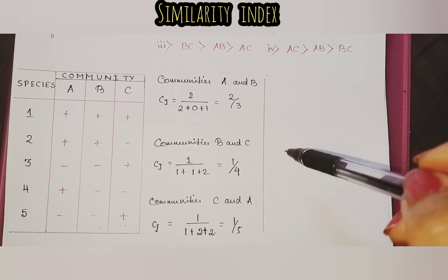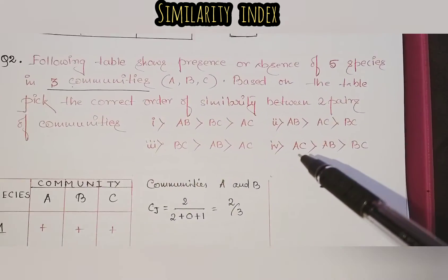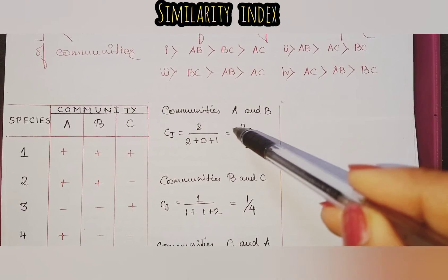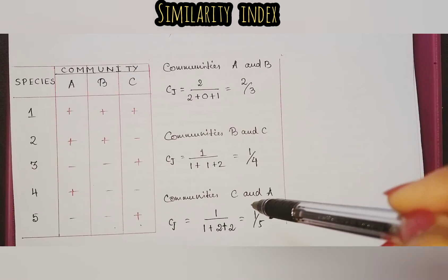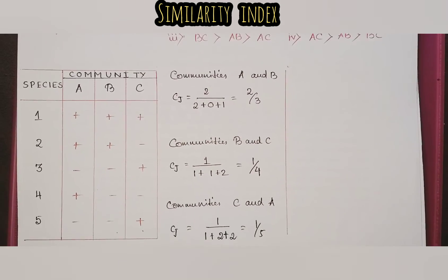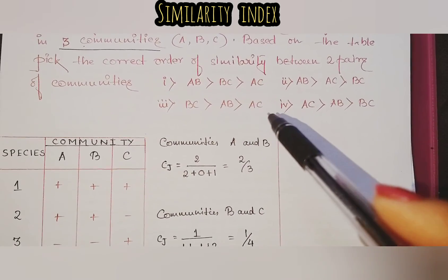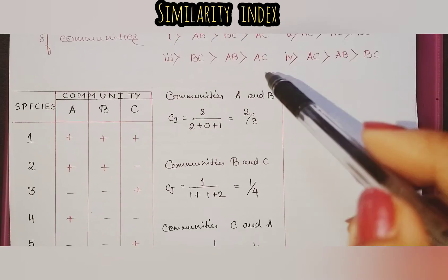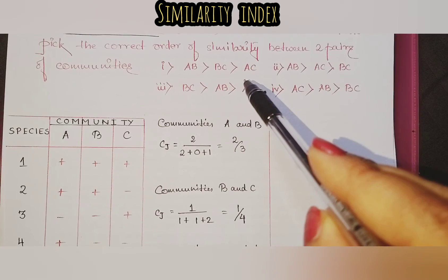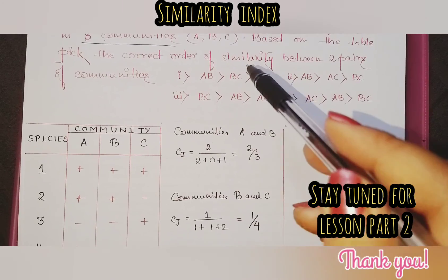From these fractions — 2/3, 1/4, and 1/5 — we can compare by taking LCM or by inspection. The correct order is: A-B is greater than B-C, and B-C is greater than A-C. That is the correct answer.